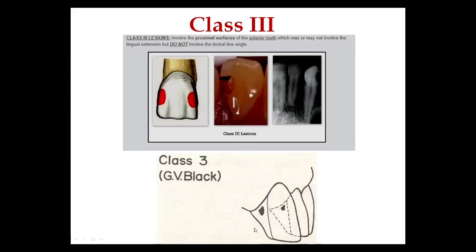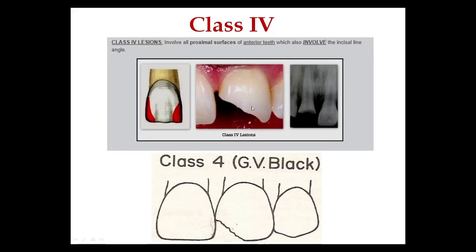Class number three involves the proximal surfaces of anterior teeth — incisors and canines — which may or may not involve lingual extension, but do not involve the incisal line angle. Class number four also involves the proximal surfaces of anterior teeth, but additionally involves the incisal line angle.